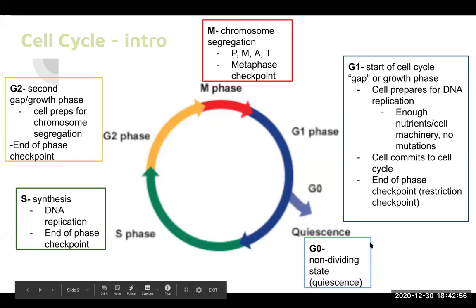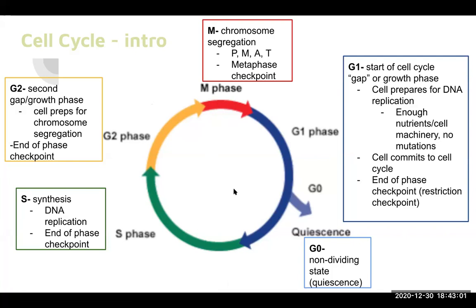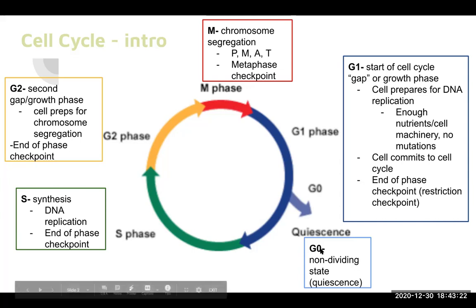The one point I'll talk about now is G0. G0 is your cell's non-dividing state — essentially when the cell is just being a cell and doing its thing. It doesn't want to replicate. Some cells stay indefinitely in G0, like cardiac muscle cells — those don't replicate. Neurons don't replicate, red blood cells don't either. So it is possible for a cell to stay indefinitely in G0 and not enter the cycle at all.